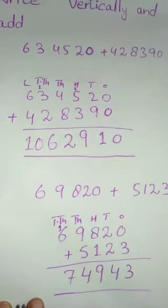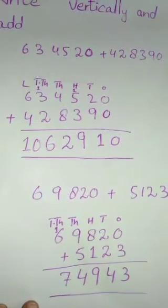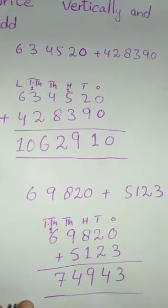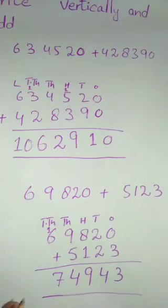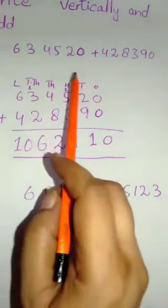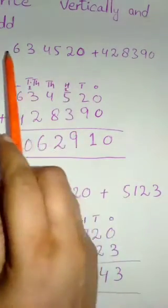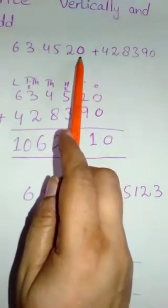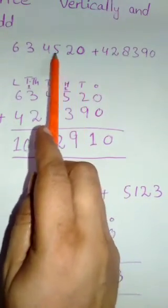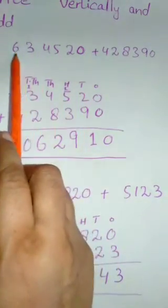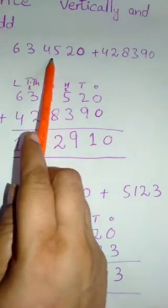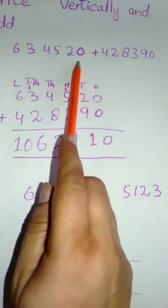Students, you will learn how to write numbers vertically and add them. First we have a number — start from one side: ones, ten, hundred, thousand, ten thousand, and lakh. The first number is six lakh thirty-four thousand five hundred and twenty.